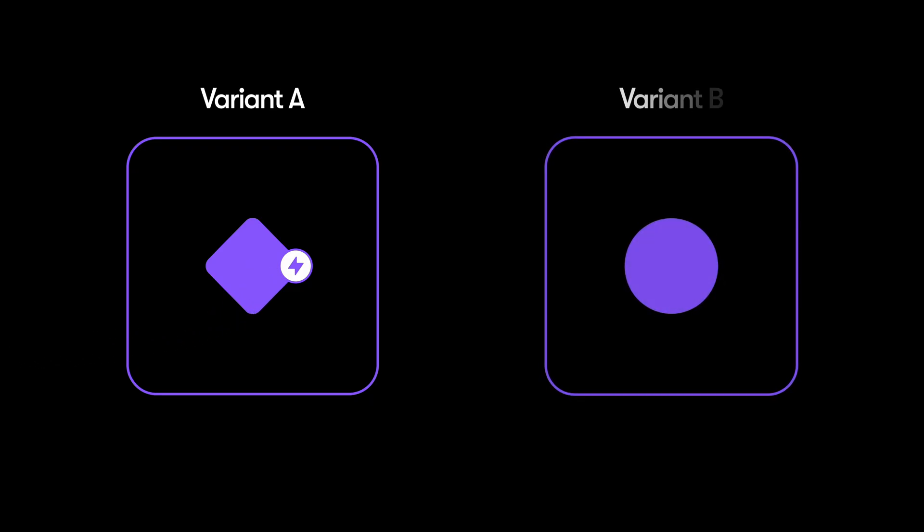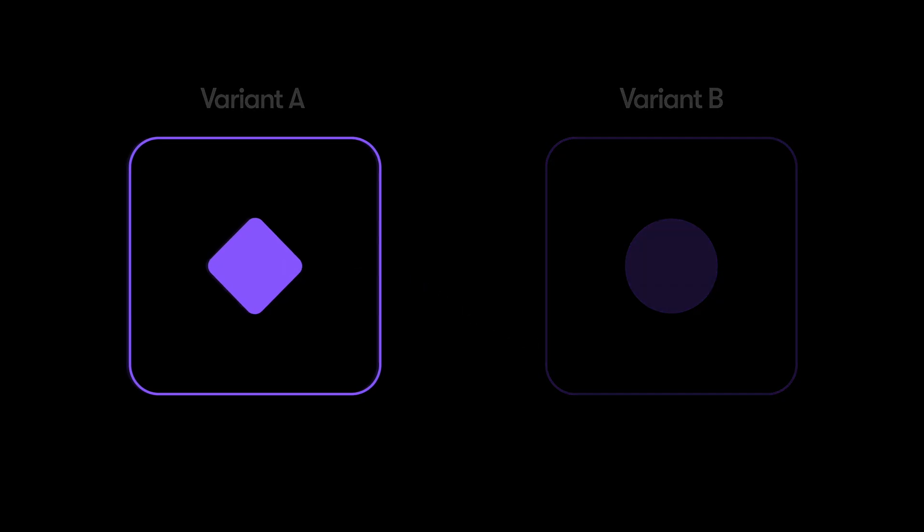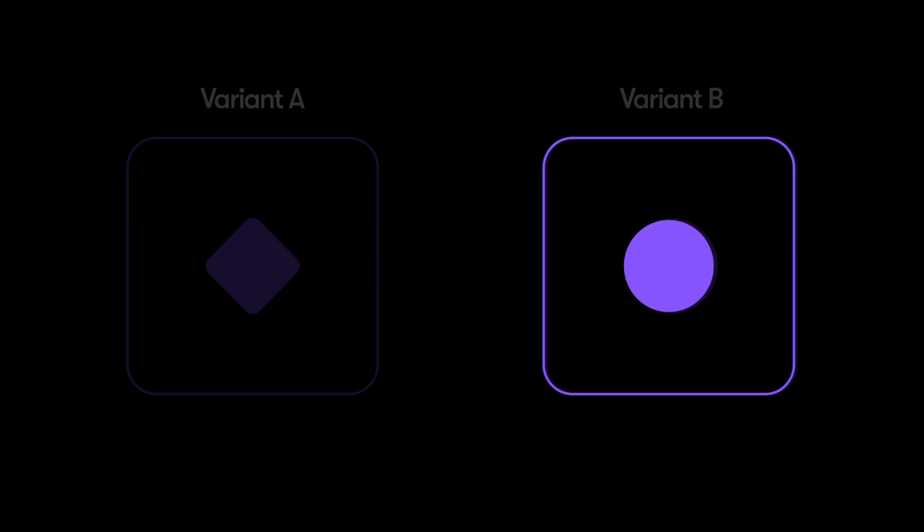Before we jump in, let's take a quick bird's eye look at the anatomy of an animated component interaction. We've got a component variant that we start on, a layer within that which is going to be our trigger layer that we add an interaction to — like an icon that we click — and then another variant that we transition to. Then Framer will automatically animate the differences between the two variants. And we can tweak things like the speed and the easing of the transition itself.